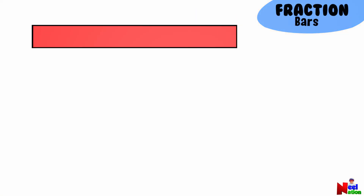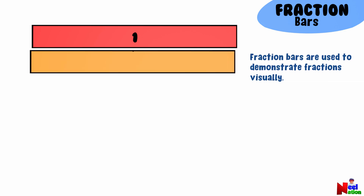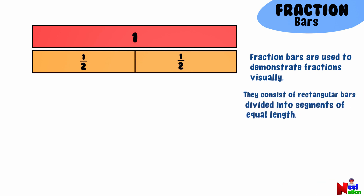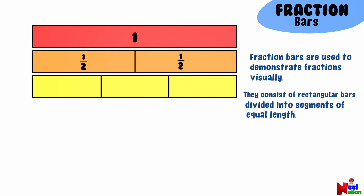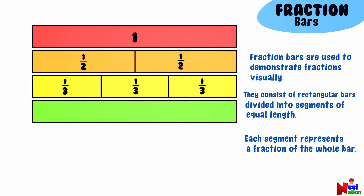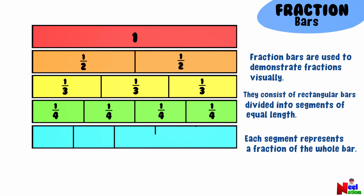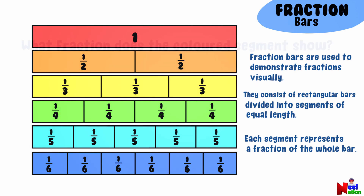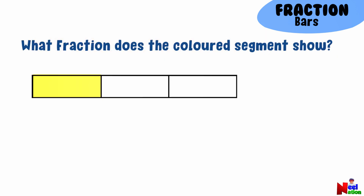Fraction bars are physical or visual representations used to demonstrate fractions. They typically consist of rectangular bars or stripes divided into segments of equal lengths. Each segment represents a fraction of the whole bar, with the total number of segments indicating the denominator of the fraction. What fraction of the bar does the colored segment show? One third. Yes, the colored segment represents one third of the whole fraction bar.